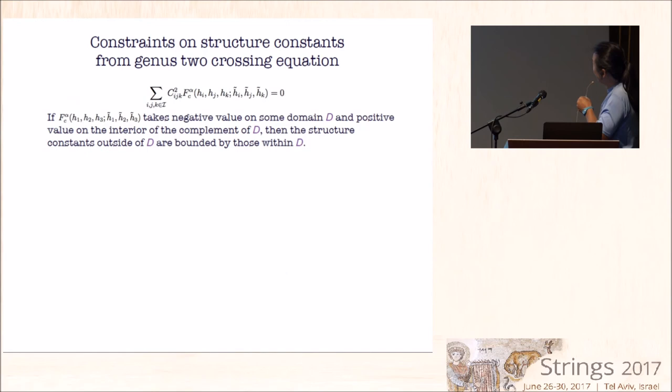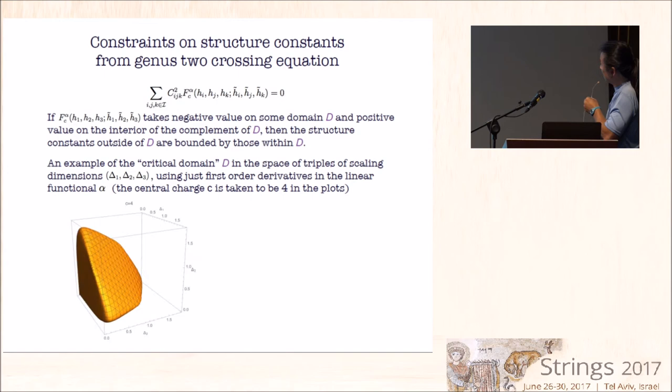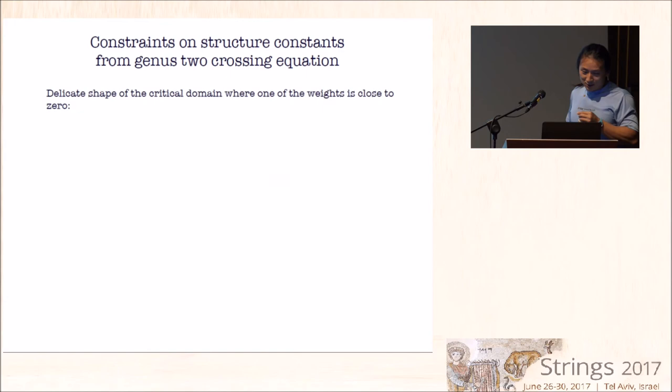So I will refer to this D as a critical domain. It's a domain in a space of three weights, and structure constants outside this domain are bounded by those inside. So this is one kind of non-trivial constraint you can get from the crossing equation. But of course you can get much more, but so far this is one piece of concrete result you can get from this without working too hard. So let me just show you an example of the critical domain in the space of a triplet of dimensions for the structure constants.